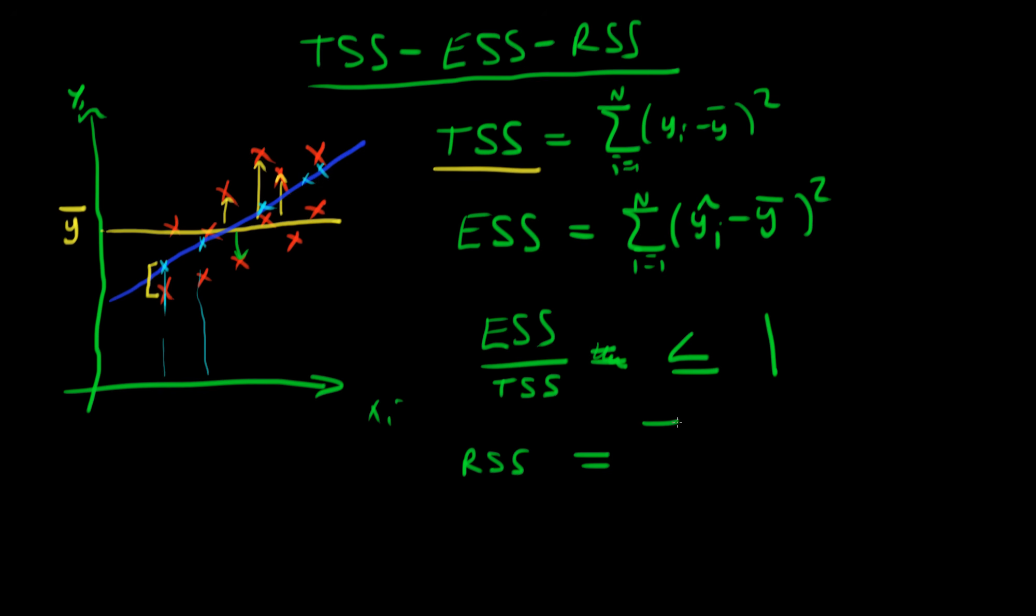And we call this sum of squares the residual sum of squares, because it's the amount which is left over after our model has tried to explain the data. And we represent that by the sum of the true values of y minus the fitted values of y, all squared. Again, we're squaring such that we treat positive and negative distances equally.